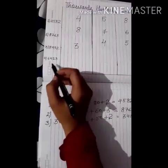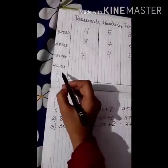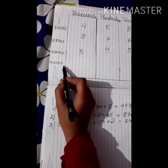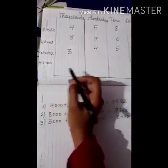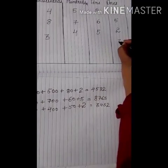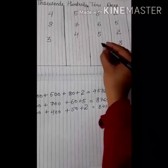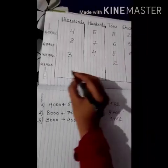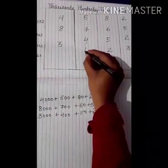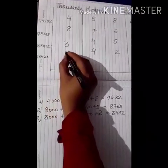Now the last sum: 6, 4, 2, 3. We will start from the last number. 3 is on the 1's place. 2 is on the 10's place. 4 is on the 100's place. 6 is on the 1000's place.